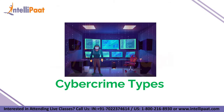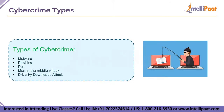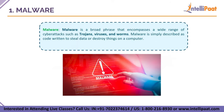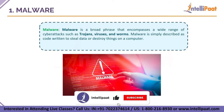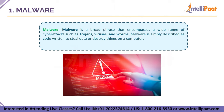The next topic is cybercrime types. The different types of cybercrime are: malware, phishing, DoS attack, man-in-the-middle attack, and drive-by download attack. The first one is malware. Malware is a broad term that encompasses a wide range of cyber attacks such as trojans, viruses, and worms. Malware is described as code written to steal data or destroy things on a computer — any software designed with the intent to damage, disrupt, or gain unauthorized access to a device.